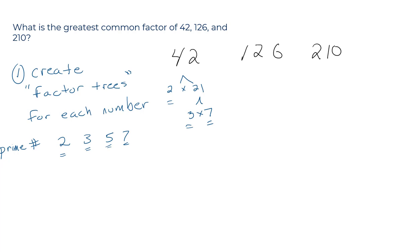That's the factor tree. How about 126? 2 times 63. And we can break down 63. That is 3 times 21. And we can break that down. That is 3 times 7. And those are all our prime numbers.